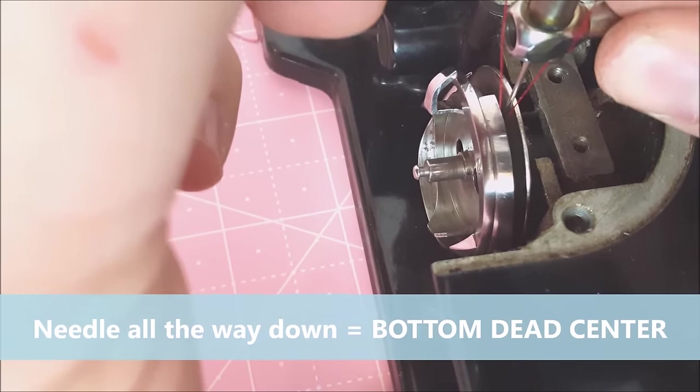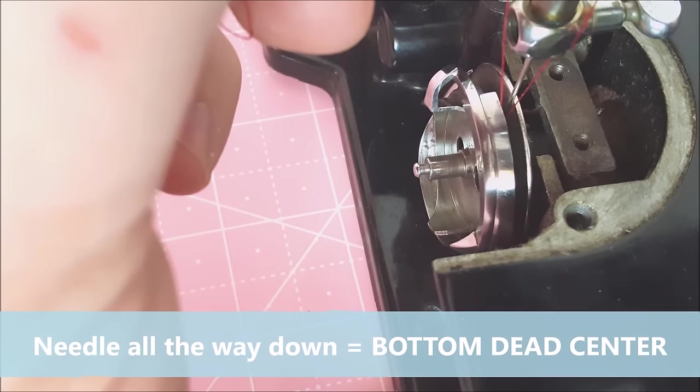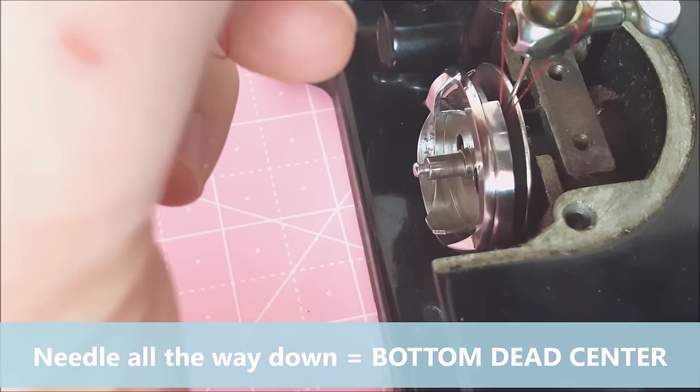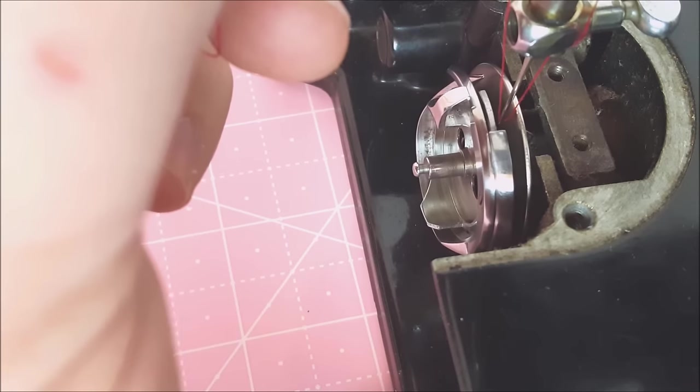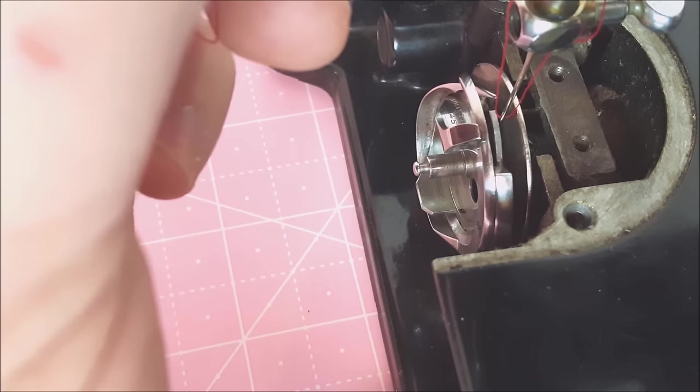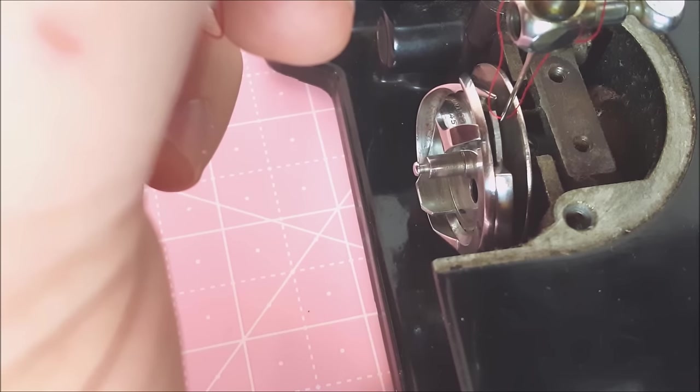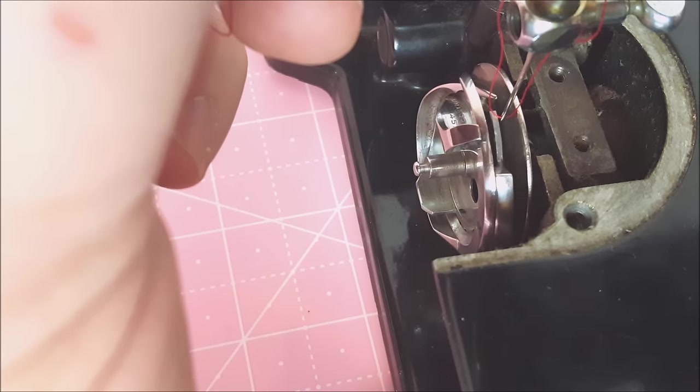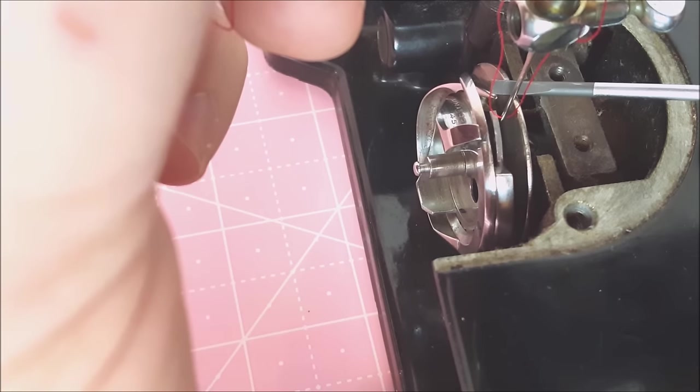That's what we call bottom dead center. That's when the needle is all the way down. When it comes back up, ninety three one thousandths of an inch, the thread relaxes just a little bit. And this point right here, right there, that is the hook, the point of the hook.